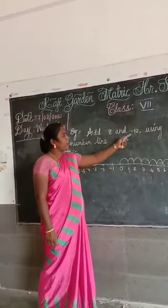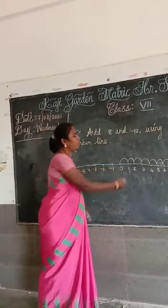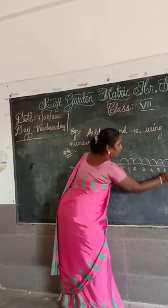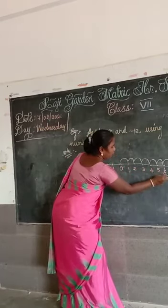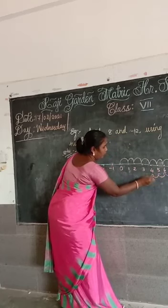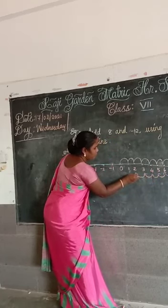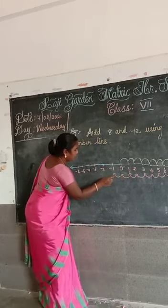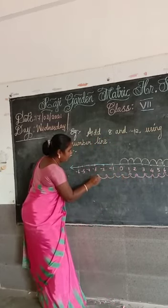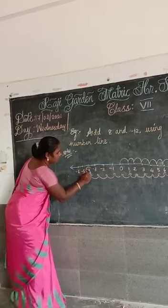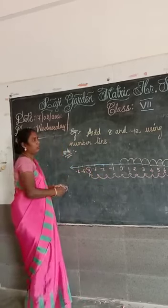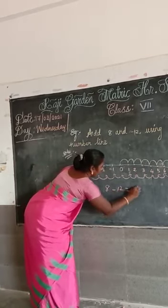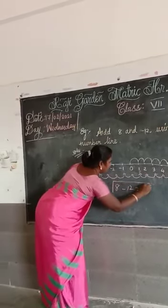Next, minus 12 is a negative integer, so you have to move to the left-hand side. Count 12 steps to the left: 1, 2, 3, 4, 5, 6, 7, 8, 9, 10, 11, 12. Therefore, the answer is minus 4. So 8 plus minus 12 equals minus 4.